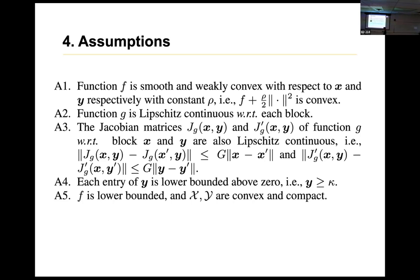For assumption 4, each entry of y is lower bounded above zero. Y is the boundary condition, or we call it constraint, that will form a closed shape that helps you to find, in order to let you find a local minimum, a global minimum, or local minimum. And for assumption 5, f is lower bounded and set of x and set of y are convex and compact.